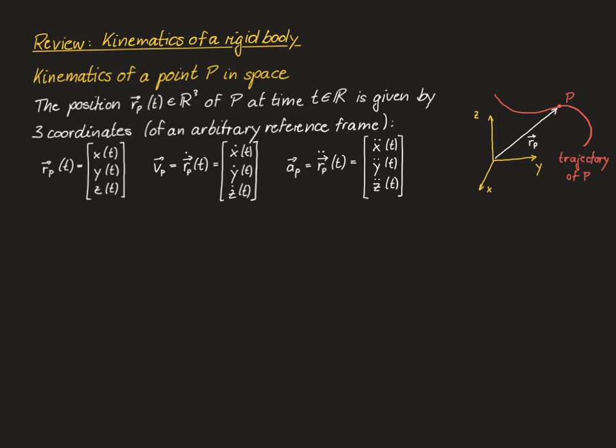Assuming that this trajectory is sufficiently smooth, which is usually satisfied in practice, we can define the first two time derivatives of the position vector, denoted by rp-dot and rp-double-dot. The first time derivative corresponds to the velocity of p, and the second time derivative corresponds to the acceleration of p.